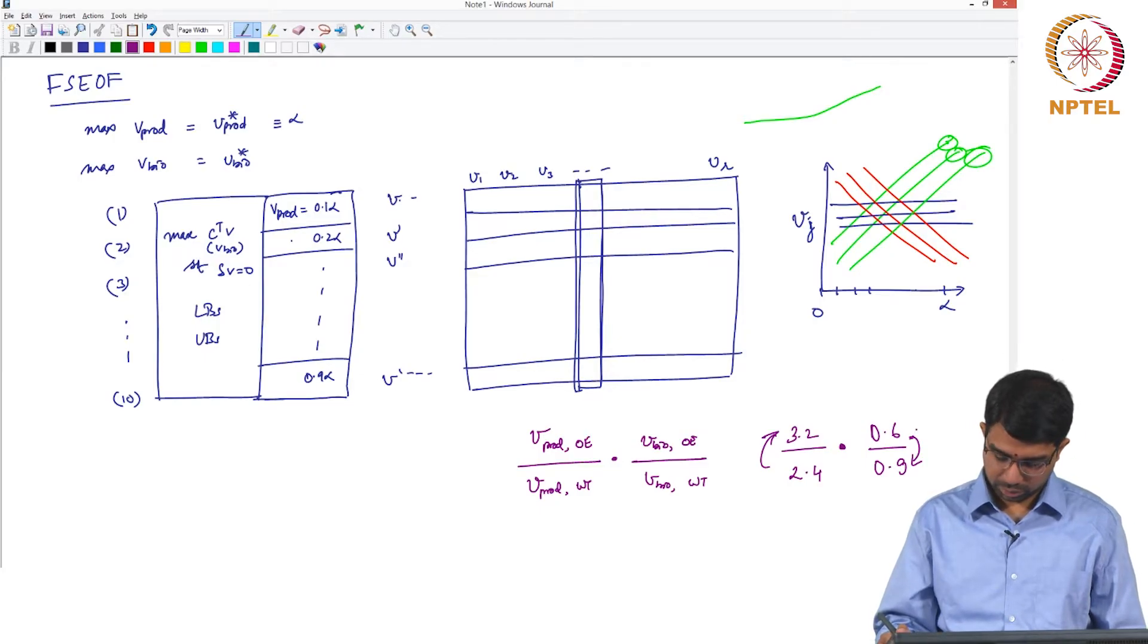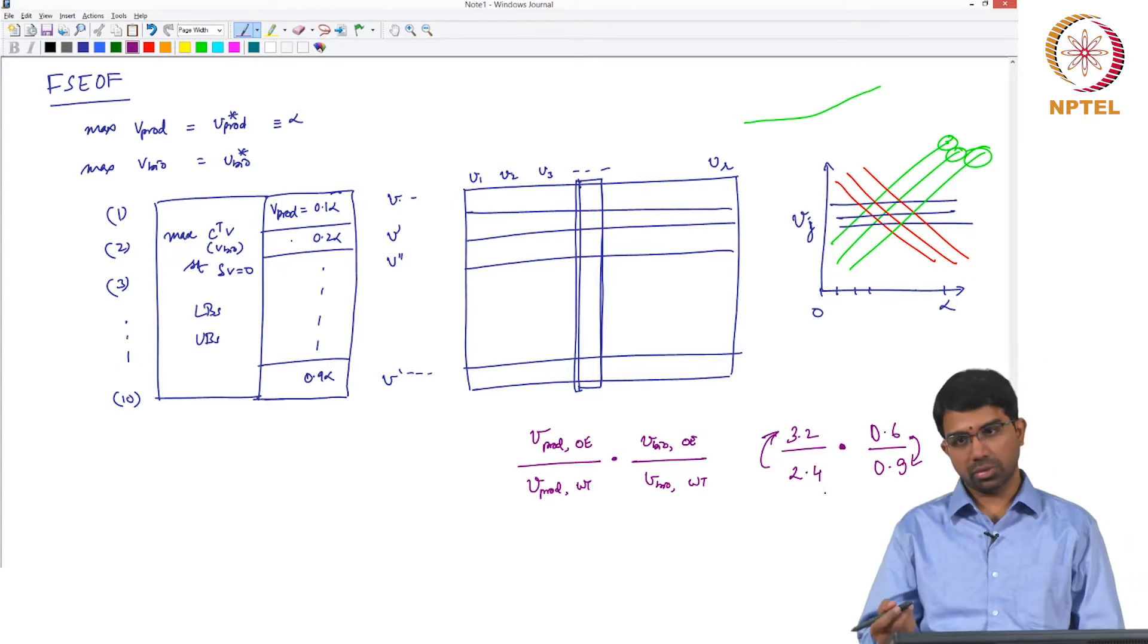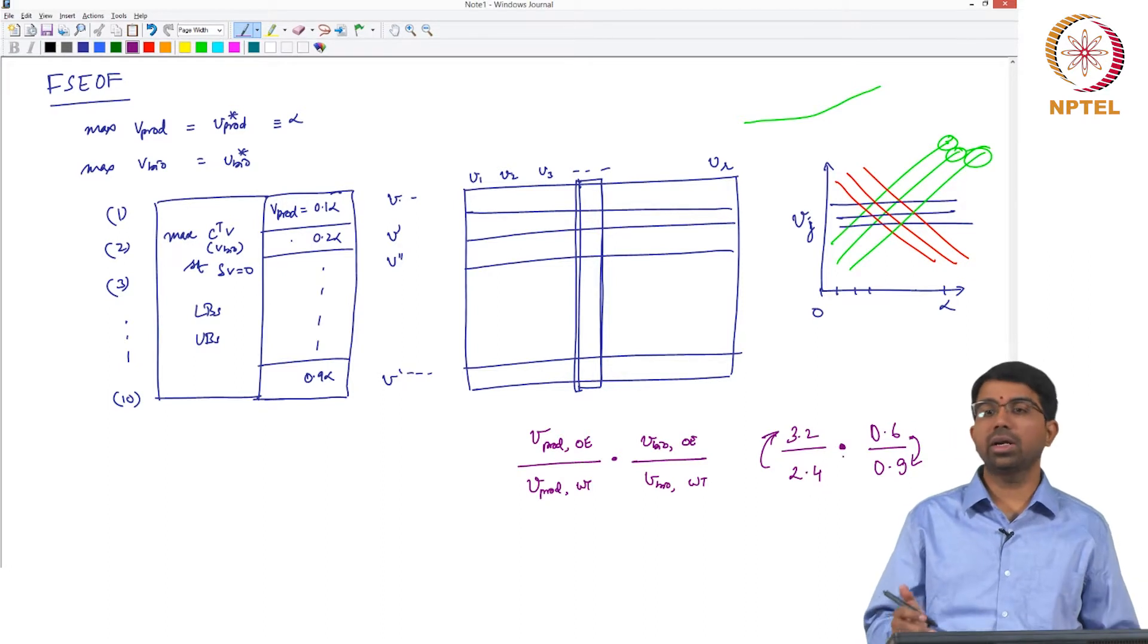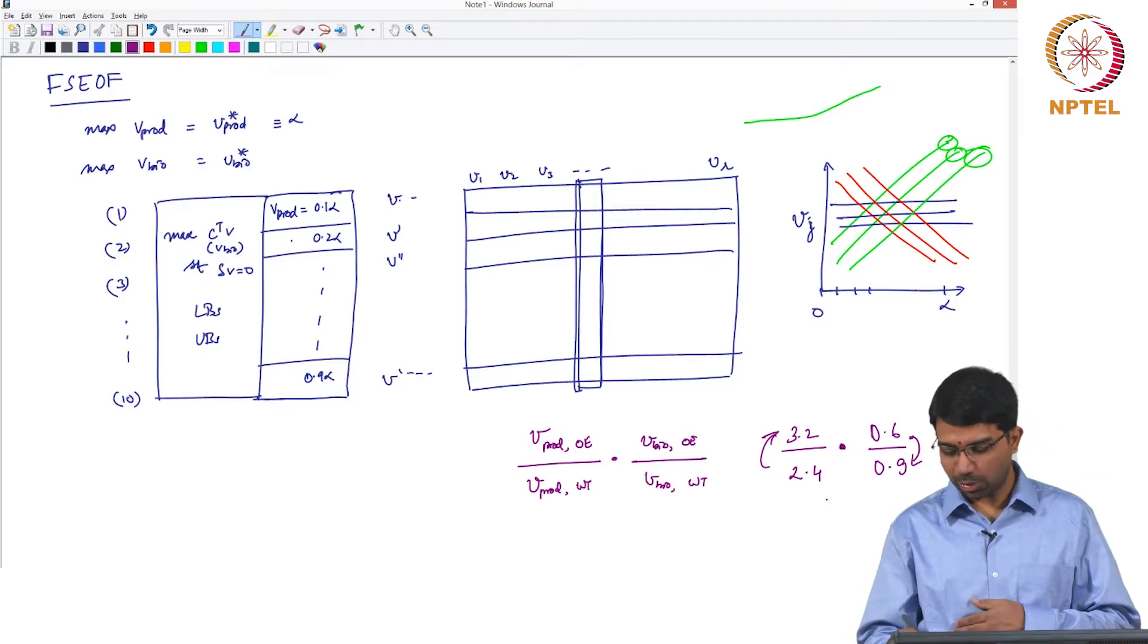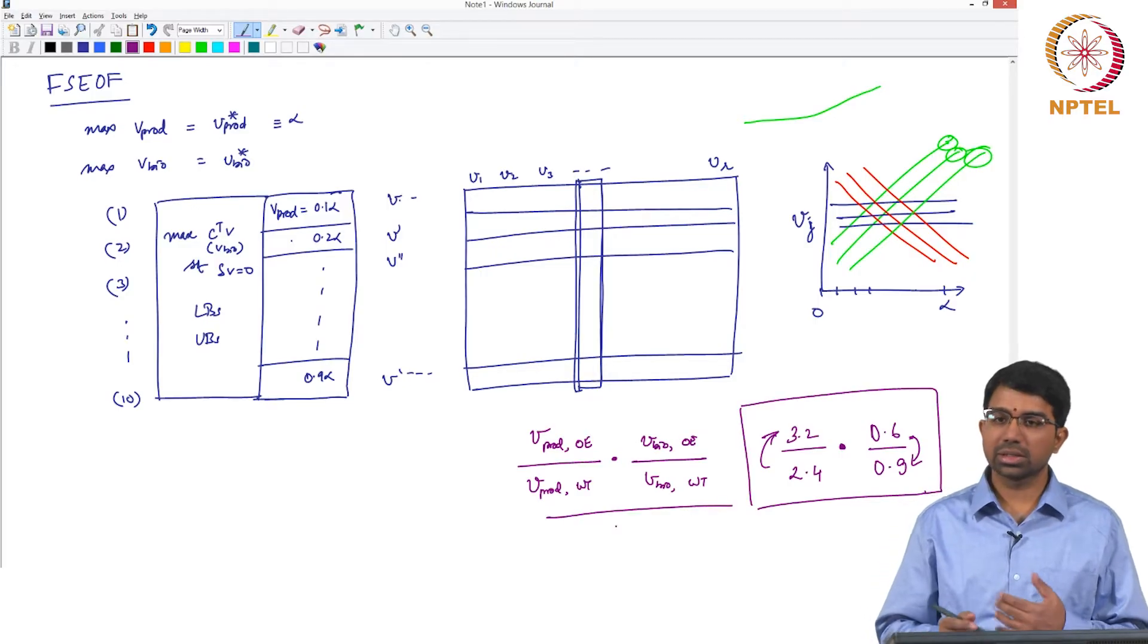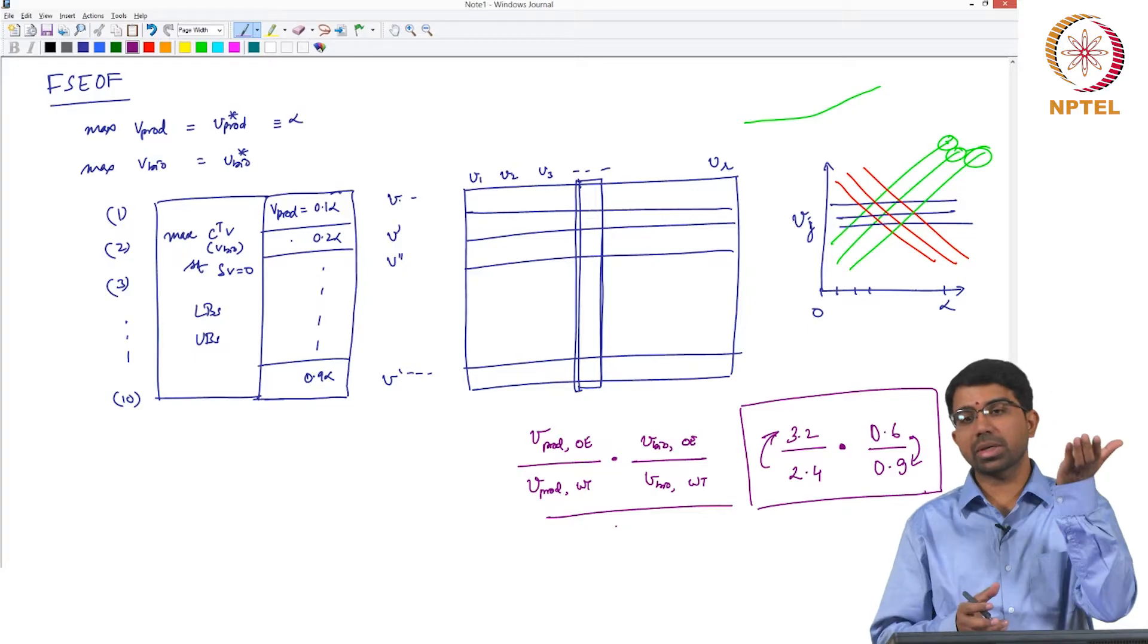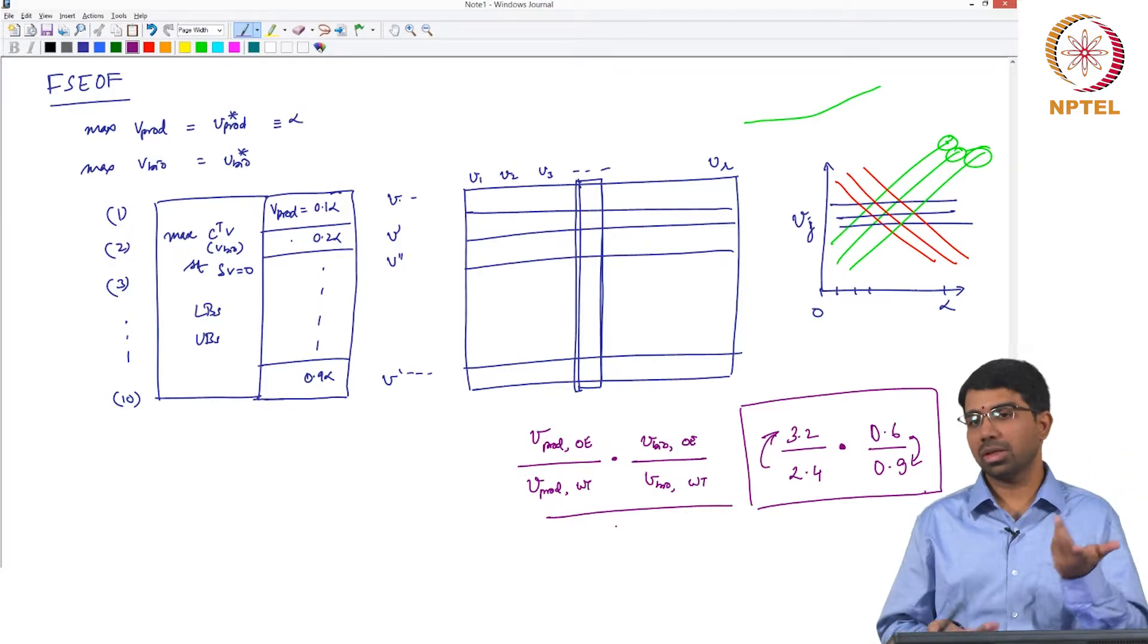So you can rank the different genes based on this fraction. Biomass flux will decrease when the product is increasing. Yes. So even that is interesting. So fair enough but you want to find the maximum. What does this say? If I want to have this quantity as high as possible, it says that I want the maximum gain in product for minimum loss in biomass, which is fair enough.